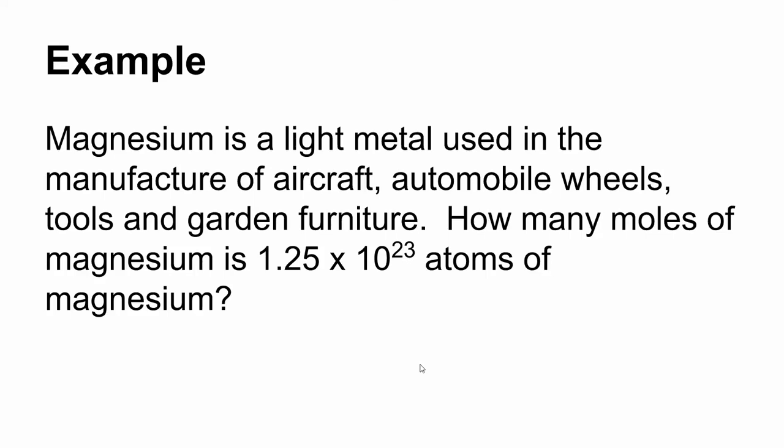So let's look at a specific question in which we are going to do a conversion. We're going to look at magnesium. Magnesium is a really light metal. We use it a lot of times in manufacturing things that we want to be lightweight, like aircrafts, automobile wheels, garden tools, furniture, etc. How many moles of magnesium is 1.25 times 10 to the 23rd atoms of magnesium? This is the question we're going to look at. This example, by the way, is right out of your textbook. So if you don't want to write all the details down, it works through this in the book.